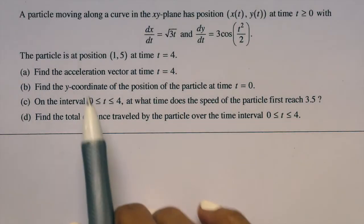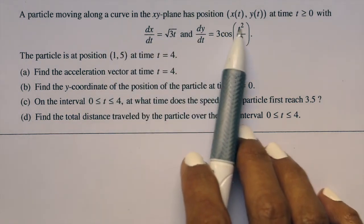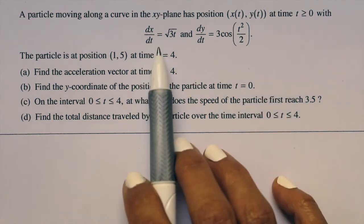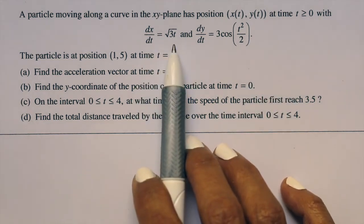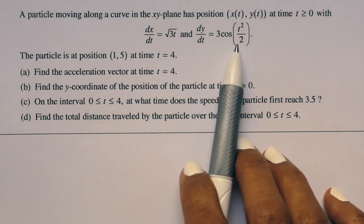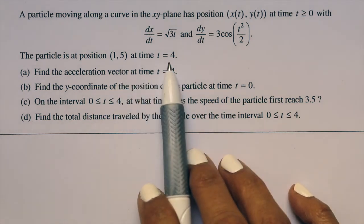This free response question says a particle moving along a curve in the xy plane has position x of t and y of t at time t greater or equal to 0. You're given dx/dt is the square root of 3t and dy/dt is given as 3 cosine of t squared over 2. The particle is at position (1, 5) when t equals 4.